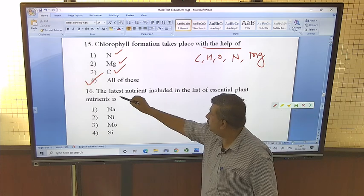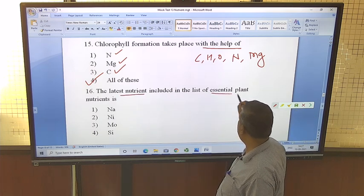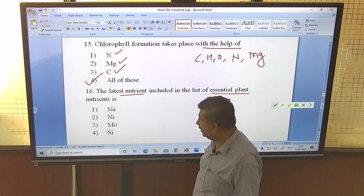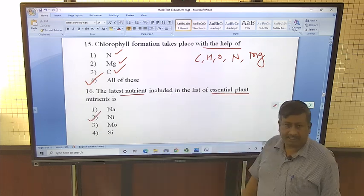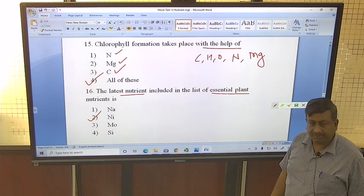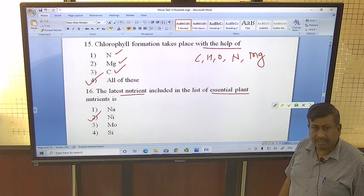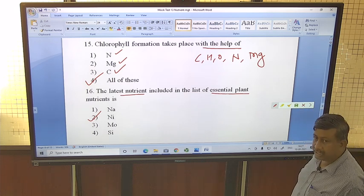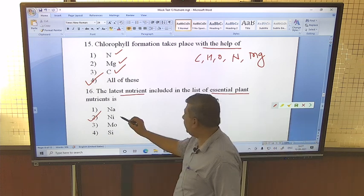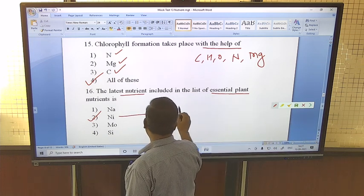The latest nutrient included in the list of essential nutrients is nickel. Nickel is essential part of urease enzyme which is required for hydrolysis of urea. That's why nickel is considered essential nutrient and included in the list of essential nutrients. There are 17 essential nutrients, so its number is 17.